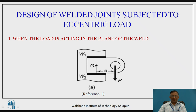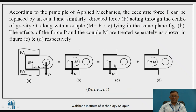This is a welded connection of two plates having center of gravity of weld section at G, whereas the load is acting at a certain distance from this center of gravity, and this load is called an eccentric load. According to the principle of applied mechanics, this eccentric load is replaced by an equal and similarly directed force P acting through CG, as well as a couple P into E considered about the center of gravity.